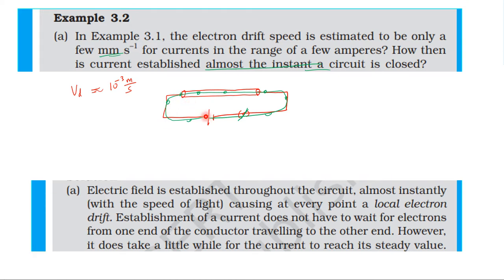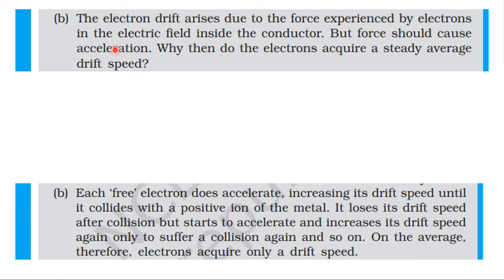Electric field is established throughout the circuit almost instantly with the speed of light, causing at every point a local electron drift. Establishment of a current does not have to wait for electrons from one end of the conductor traveling to the other end. The electron drift arises due to the force experienced by the electrons in the electric field inside the conductor. But the force should cause acceleration. Why then do the electrons acquire a steady average drift speed?